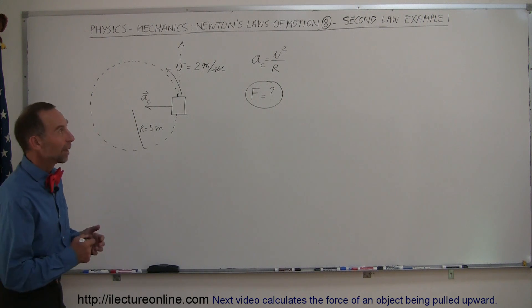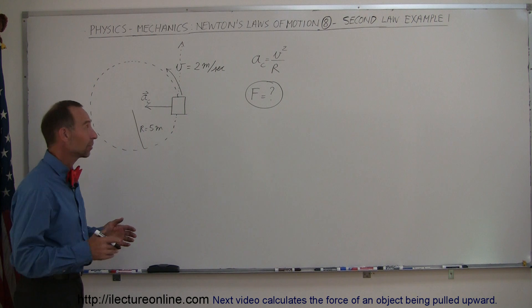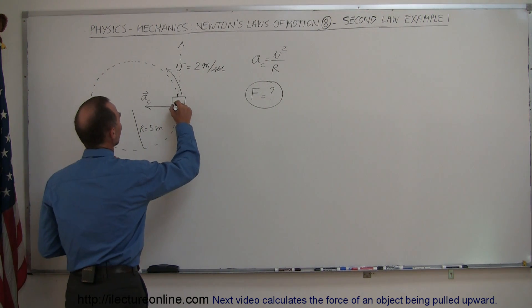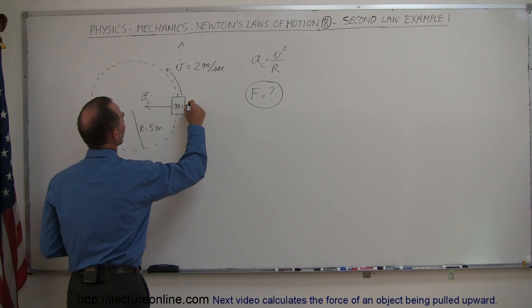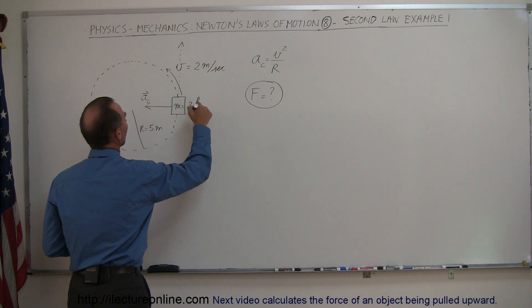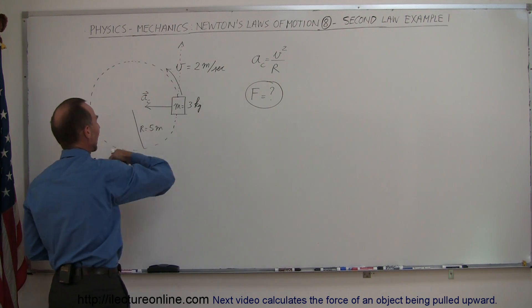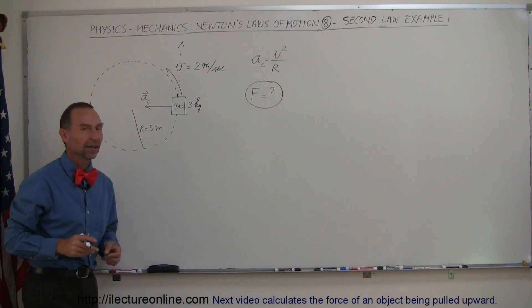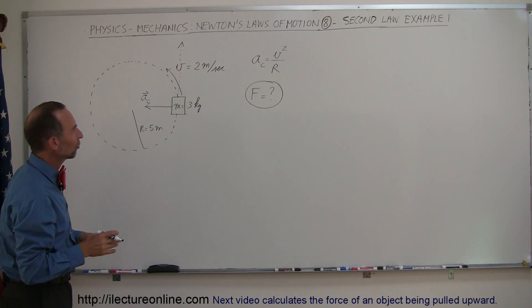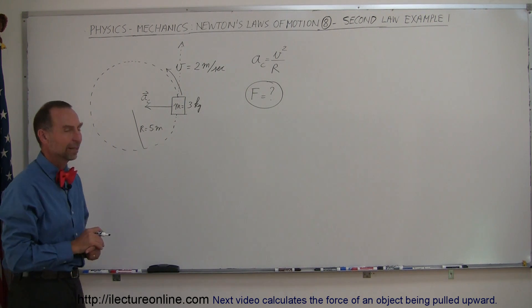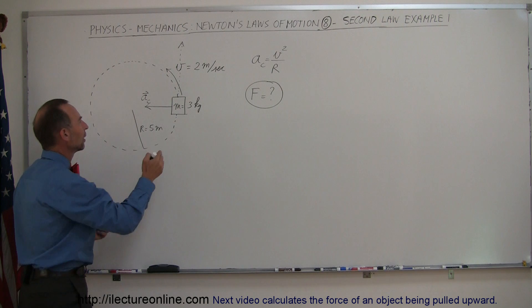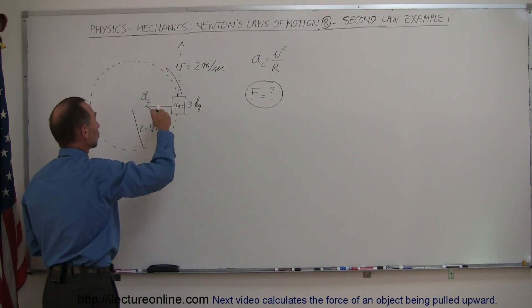And here's the first of a set of examples on Newton's second law of motion. Here we have an object with mass m. Let's say that the mass is equal to 3 kilograms, and it's going around a circular path of radius 5 meters with a tangential velocity of 2 meters per second. And what is the force required to keep it in that circular motion?